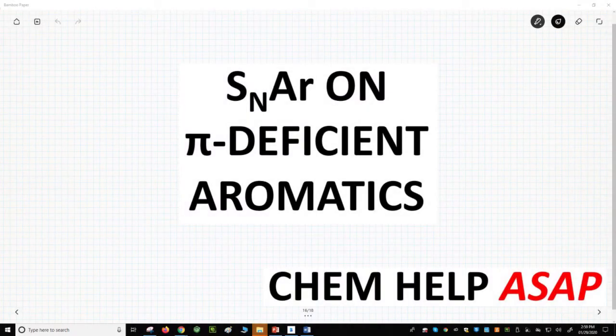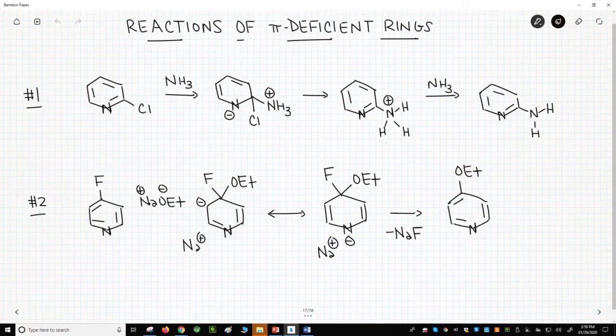Good day from Chem Help ASAP. Let's see a few sample substitution reactions on pi-deficient aromatic rings. We have two reactions on the screen with full mechanisms.